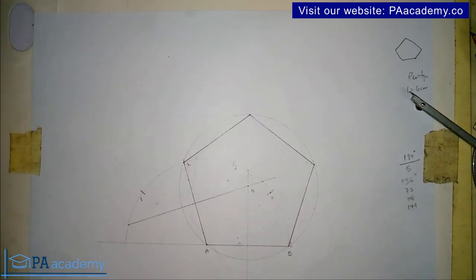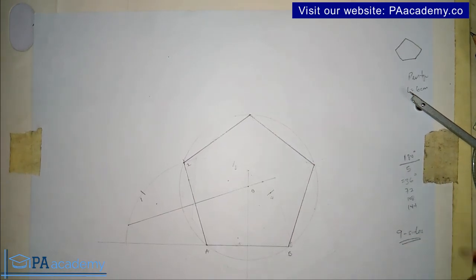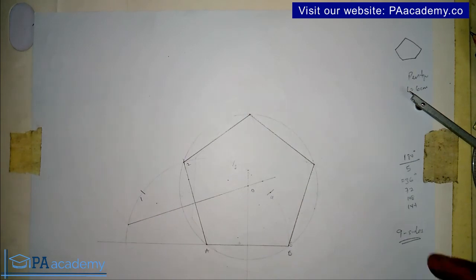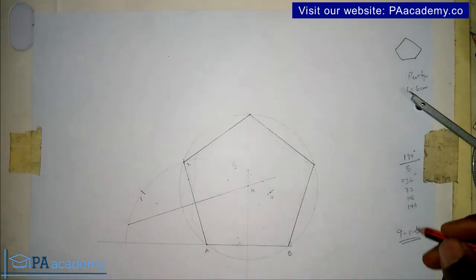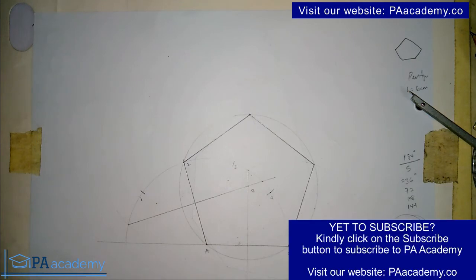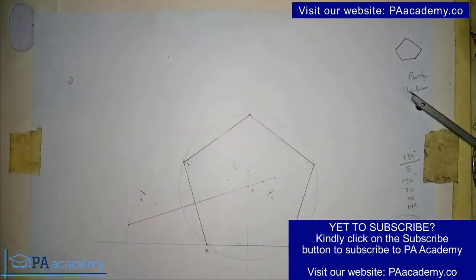That is it for this video. I'm going to be doing a part two of this video which this time I'm going to be doing nine sides, just to show you that irrespective of the polygon you are drawing, it's the same principle. If you are yet to subscribe to PA Academy, kindly click on the subscribe button. If you have any questions or comments, leave them in the comment section below. If you find this video helpful, click the like button and give this video a thumbs up. The next video that talks about nine sides should come up somewhere here on your screen. Thank you and bye for now.